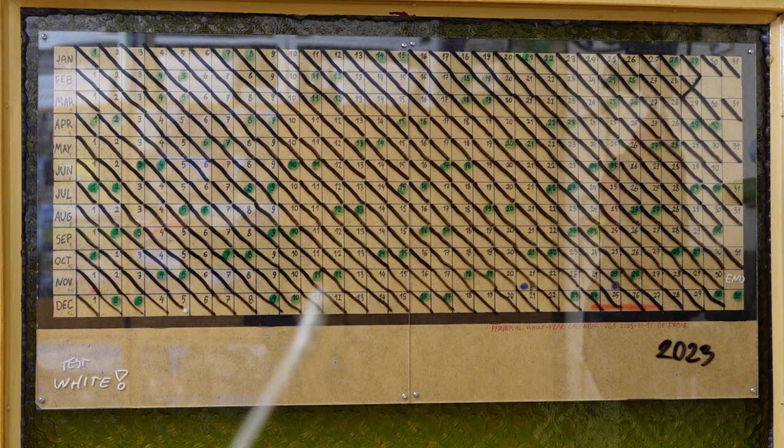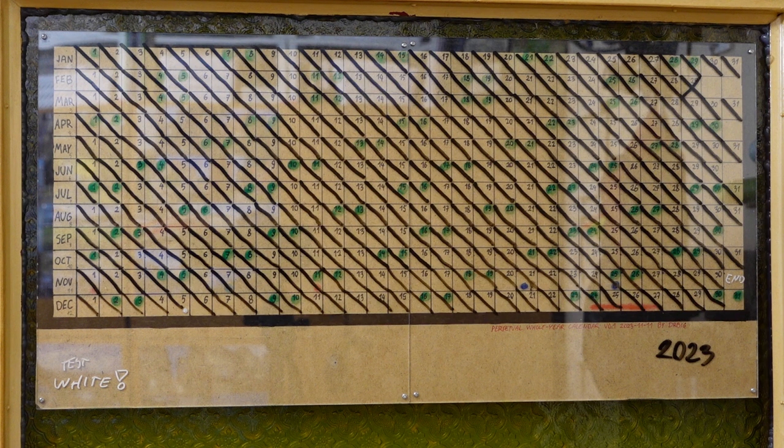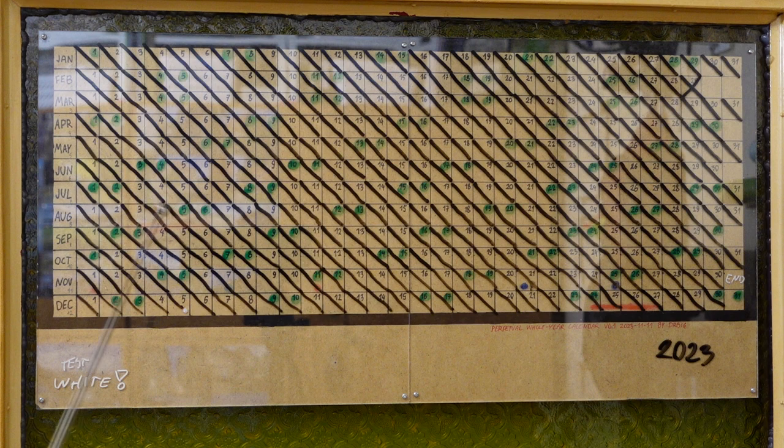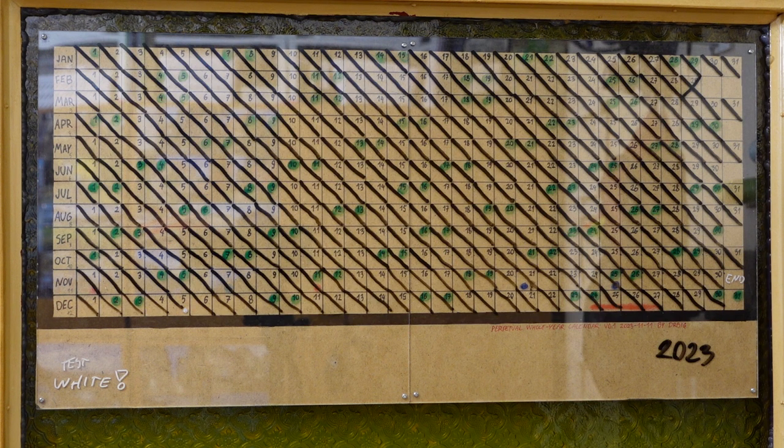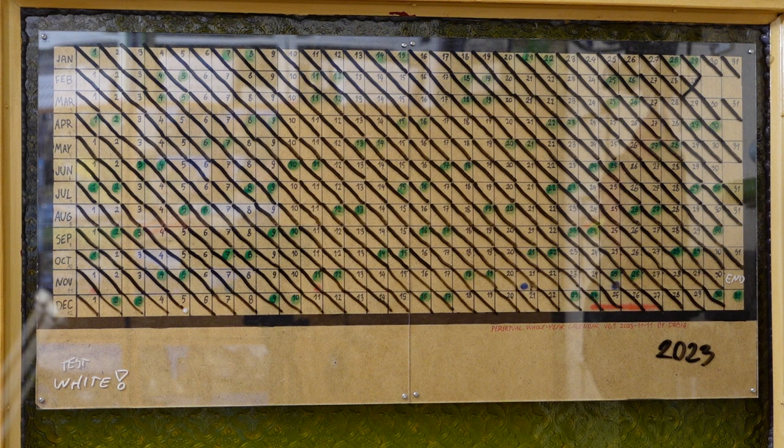You usually don't find whole year calendars because they get very big very quickly. As you can see here, the cells for days are like 15 millimeters, the side of the square, and this whole thing is already 52 centimeters, over half a meter. If you want to write stuff inside a day cell, you'll need a wall-sized calendar.